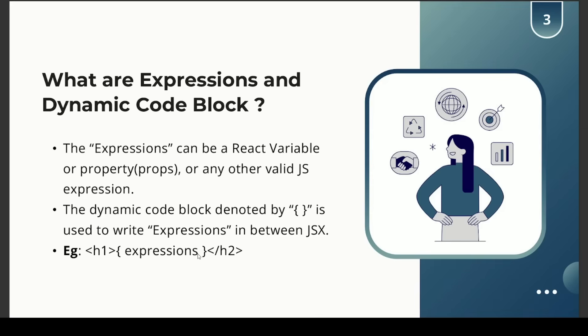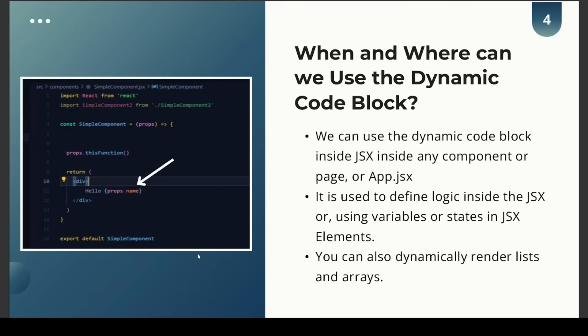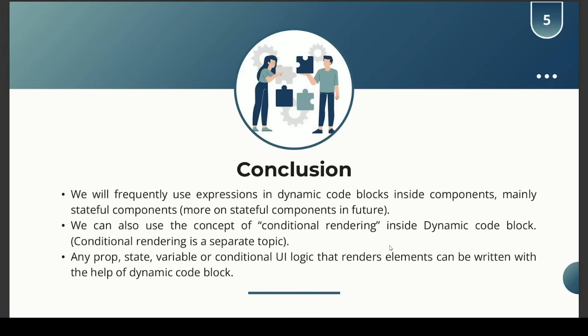When and where can we use the dynamic code block? As we saw in the previous tutorial, props use the dynamic code block. Inside any component, page, or app.jsx, it is used to define logic inside JSX, use variables or states in JSX elements. You can also dynamically render lists and arrays, which we will cover in upcoming tutorials.